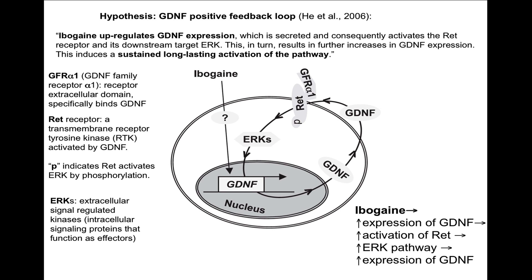GDNF has a positive feedback loop. This is a model by Dorit Rahn's group at the University of California: ibogaine acts in the nucleus to cause the expression of GDNF; GDNF then binds at the surface to produce more GDNF — a positive feedback loop. You want positive feedback loops for growth, evolutionarily speaking. Growth has to occur explosively under conditions of plenty, and it has to stop under conditions where nutrients are limiting — basically a positive feedback loop to take advantage of the sufficiency-and-starvation rhythm of available food in the natural world.